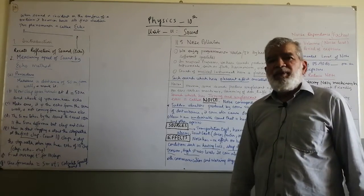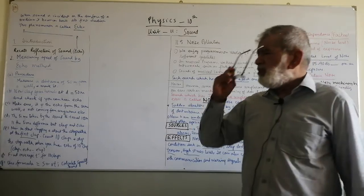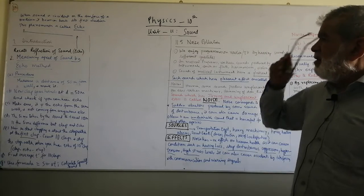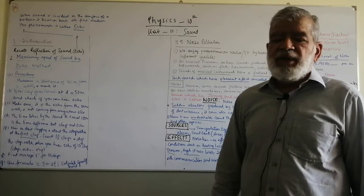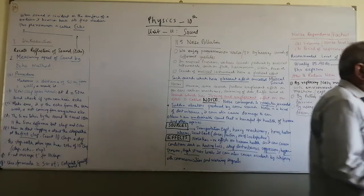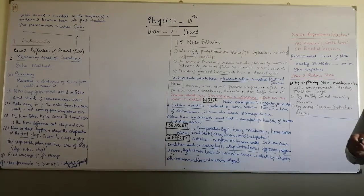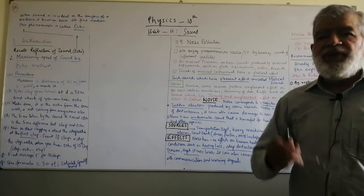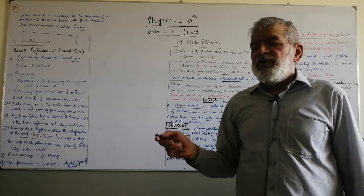Last time we discussed about reflection of sound or echo. Recall that lecture because the next one is related to it. Reflection is when sound is incident upon a medium and it bounces back into the same medium — this phenomenon is known as reflection. I have written it on the board. We also calculated the speed of sound using the formula V equals lambda F.